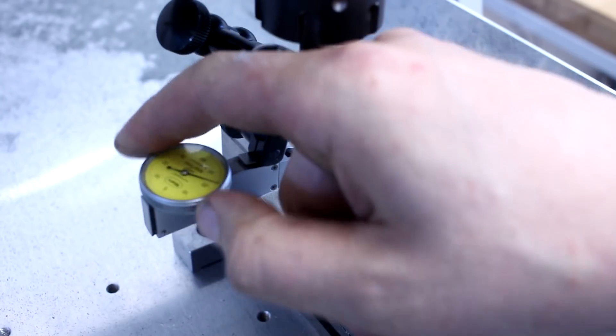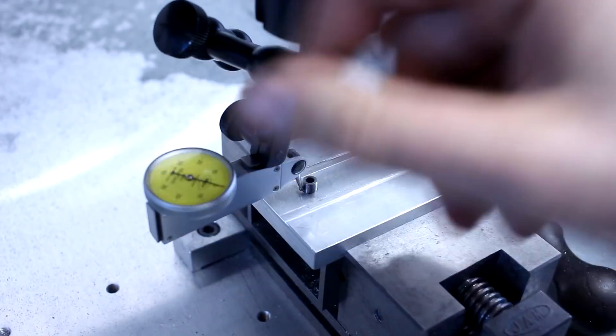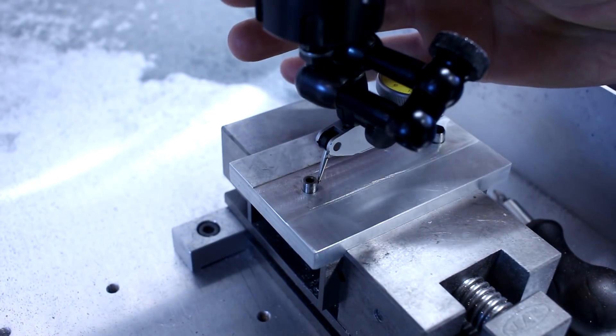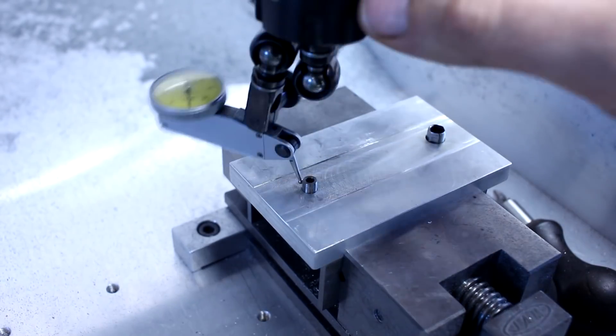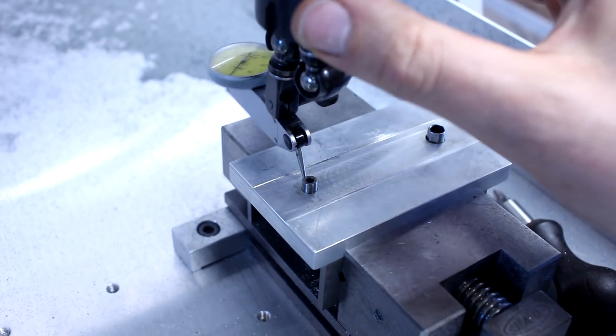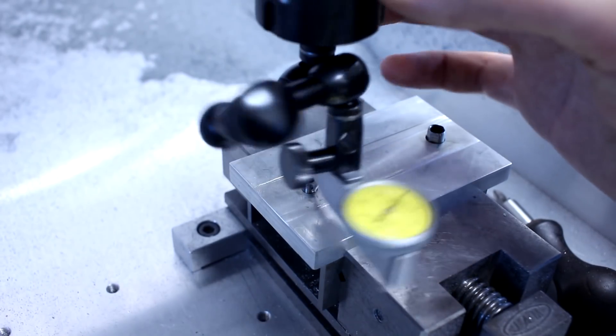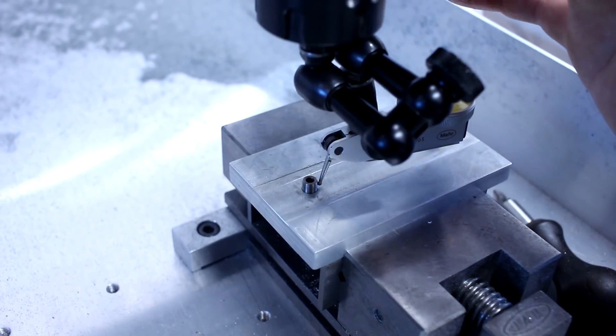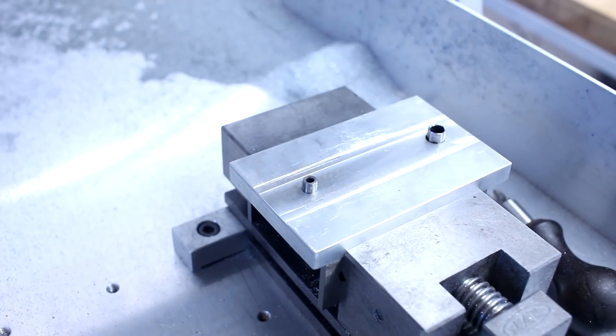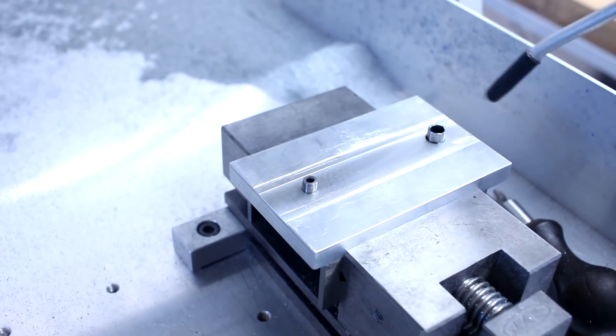The fixture is held in the wise on the CNC router. And I'm using a dial and test indicator to center on the left pin of the fixture. That's also my zero point in the cam program. Cleaning off the fixture. And the first part goes on.